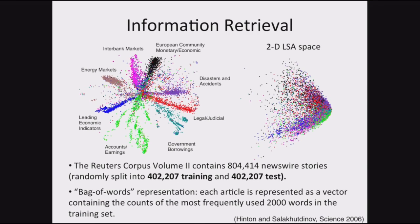For text data, this was done on the Reuters dataset with about 800,000 stories. Taking a bag-of-words representation, you can compress it down to two-dimensional space and see what that space looks like. I always like to joke that the model basically discovers that European community economic policies are just next to disasters and accidents — and this was data collected in 1996. Autoencoders are typically used for compression or dimensionality reduction.